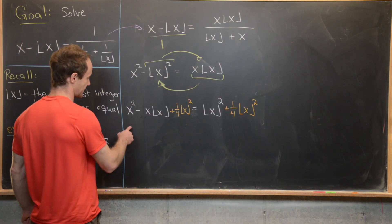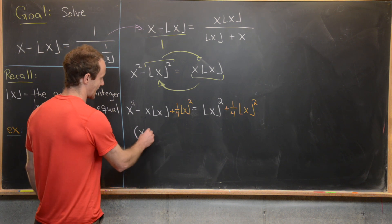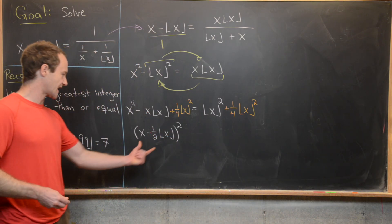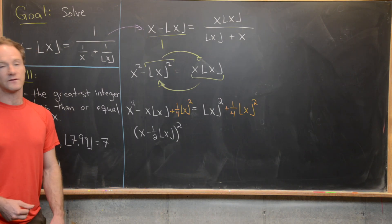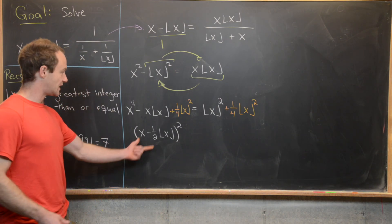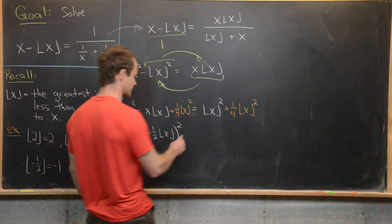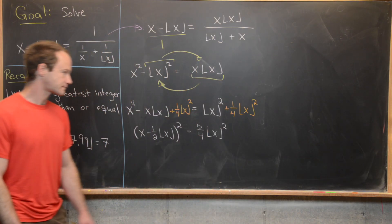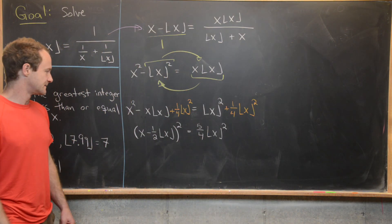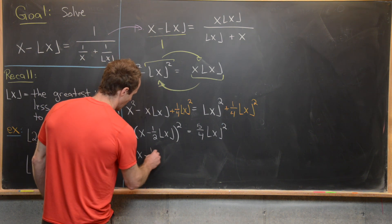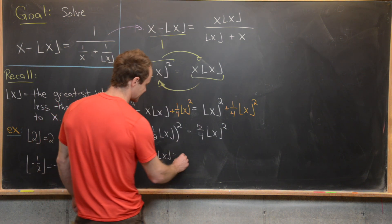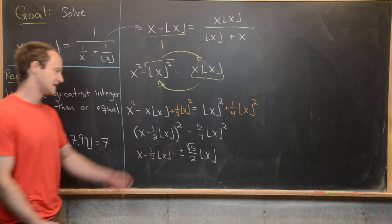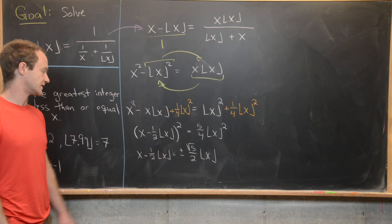On the left-hand side we can factor as (x minus one-half·floor(x)) squared. Checking: one-half·floor(x) times itself gives one-quarter·floor(x) squared, and one-half plus one-half is 1, so the foil works out. On the right, the like terms add up to five-quarters·floor(x) squared. Taking the square root of both sides gives x minus one-half·floor(x) equals plus or minus the square root of 5 over 2 times the floor of x.